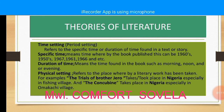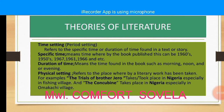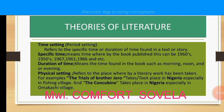Starting with time setting or period setting — by definition, it refers to the specific time or duration of time found in a text or story. Specific time means the time whereby the book was published, which can be a particular year. Duration of time means the time found within the book, such as morning, noon, or evening.